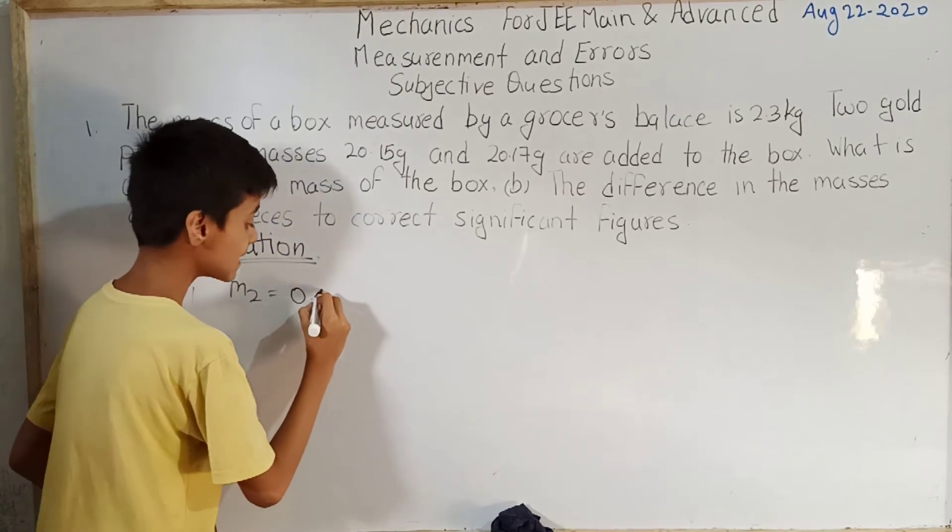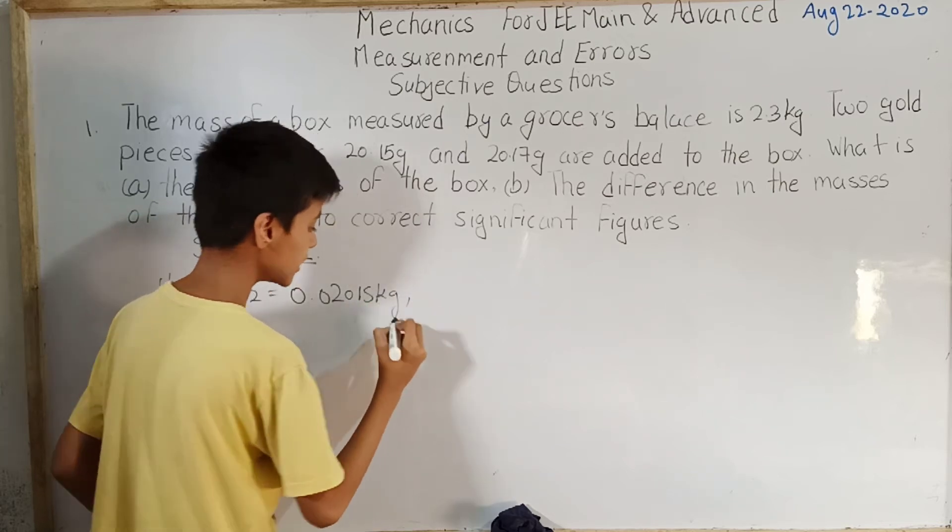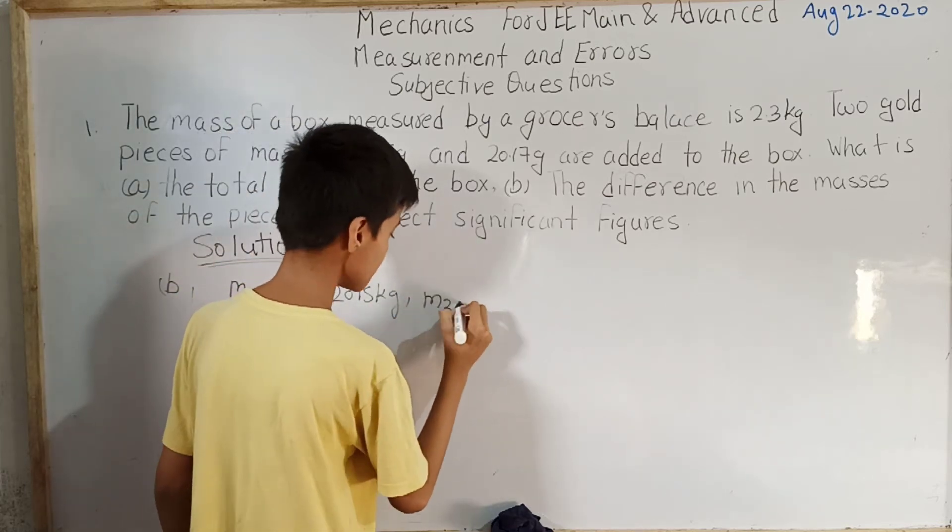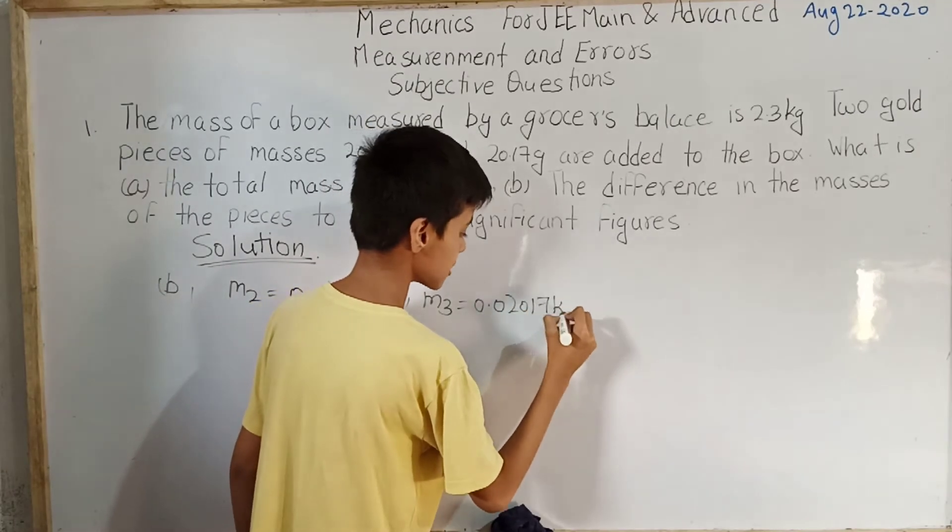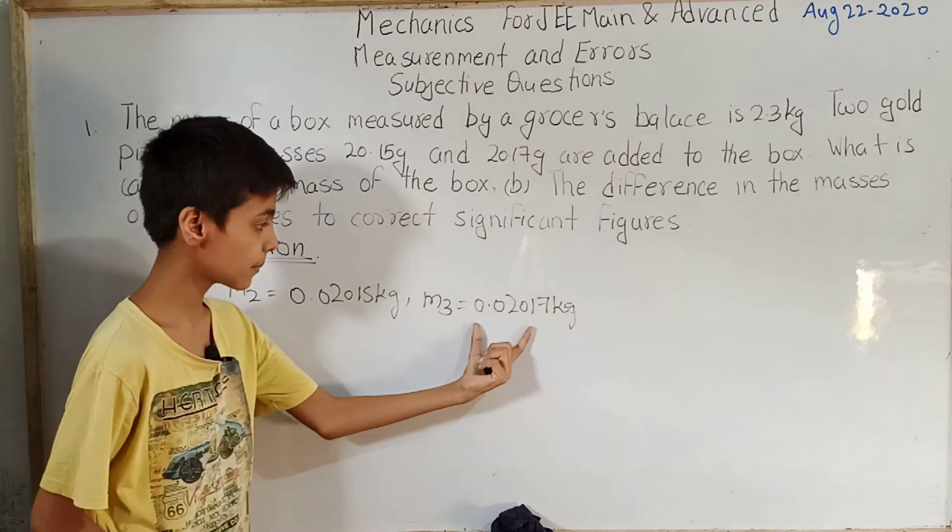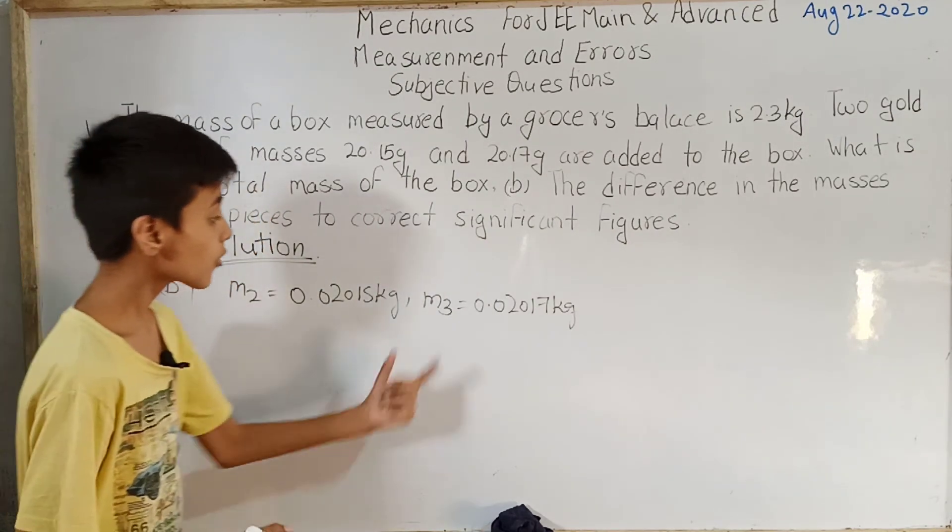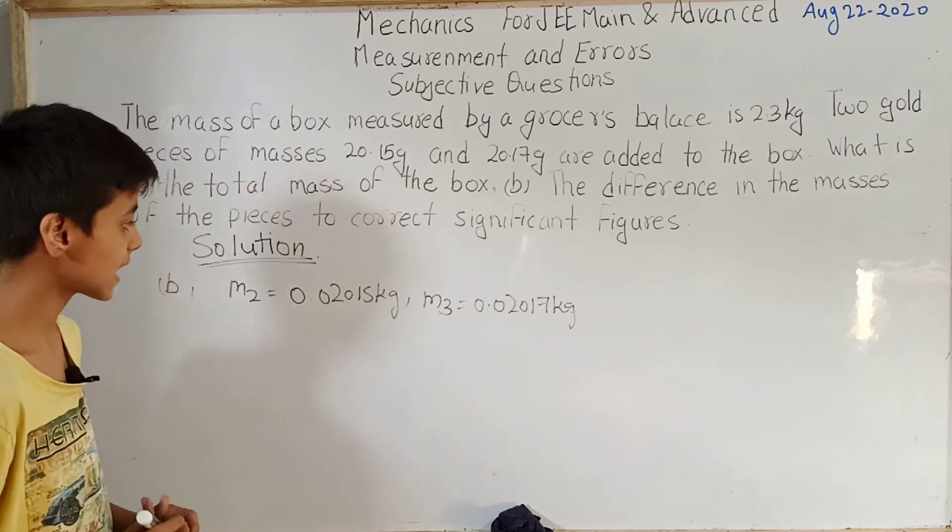Where m2 value in SI units, in kg, we have taken 0.02015 kg and m3 equals to 0.02017 kg. Now this number is greater than this number, so we'll subtract this number from this number and finally we'll get the answer.